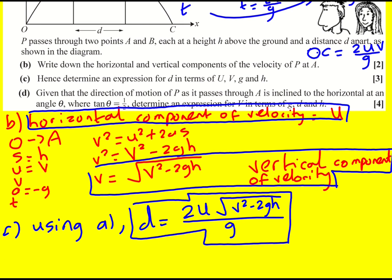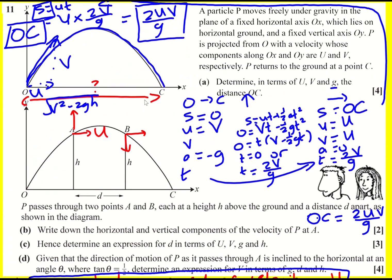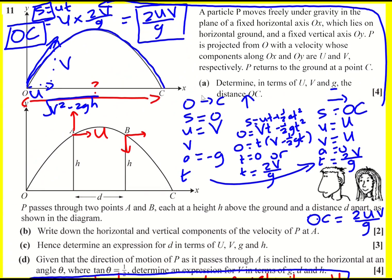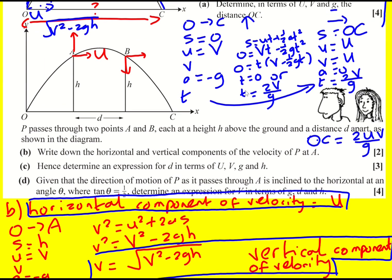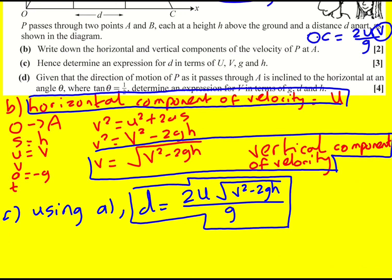If you did this the full way it would look a lot like the argument for part A, but with s = 0 from A to B, and u_vertical = √(V² − 2gh). You'd get the same time formula but with V replaced by that square-rooted expression, and then for the horizontal displacement you'd carry through and get the same result with V replaced by the new velocity.